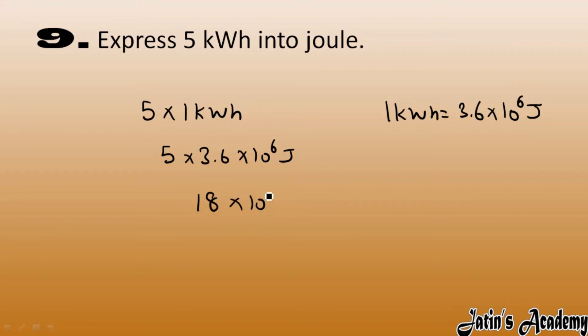You can express the answer as 18 megajoule, or you can convert it into physics unit by dividing by 10 and multiplying by 10, which gives 1.8 × 10^7 Joule. This is the expression: 5 kilowatt hour converted into Joule.